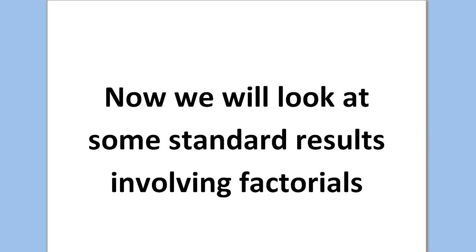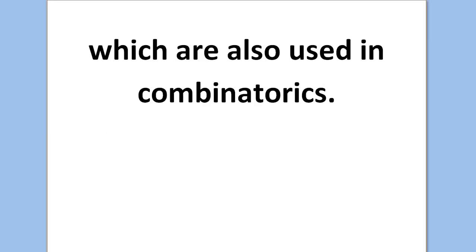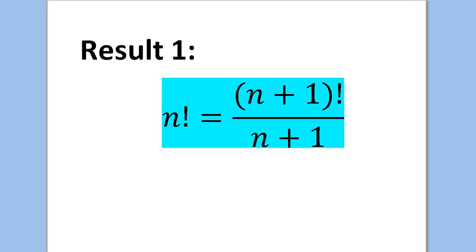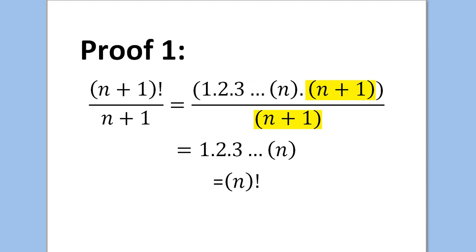Now we will look at some standard results involving factorials, which are also used in combinatorics. Result 1: n factorial equals n plus 1 factorial all over n plus 1. You can rearrange that in different ways to suit different situations. Proof: n plus 1 factorial divided by n plus 1 equals 1 times 2 times 3, all the way up to n plus 1, divided by n plus 1. We factor out the n plus 1, highlighted in yellow, and we're left with 1 times 2 times 3 all the way up to n — that's just n factorial by definition. So that concludes the proof.